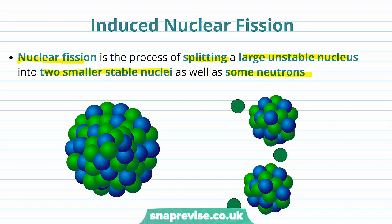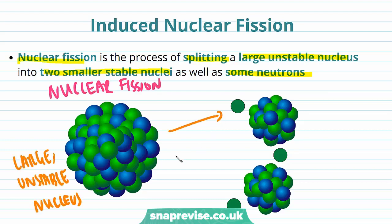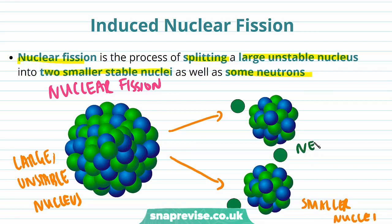Here's an illustration of the process of nuclear fission. A large unstable nucleus splits into two smaller nuclei and also some neutrons, usually two or three of them.